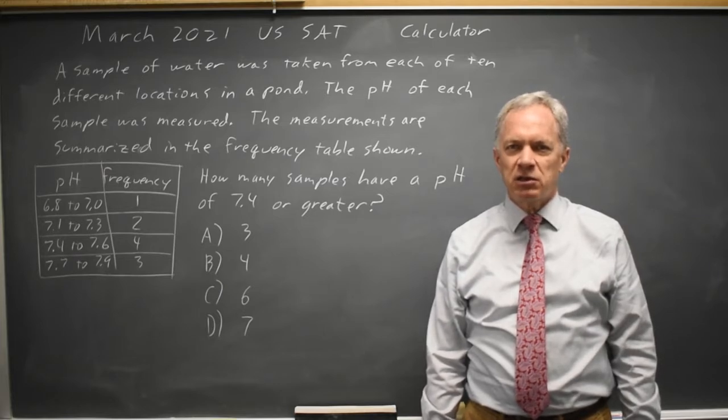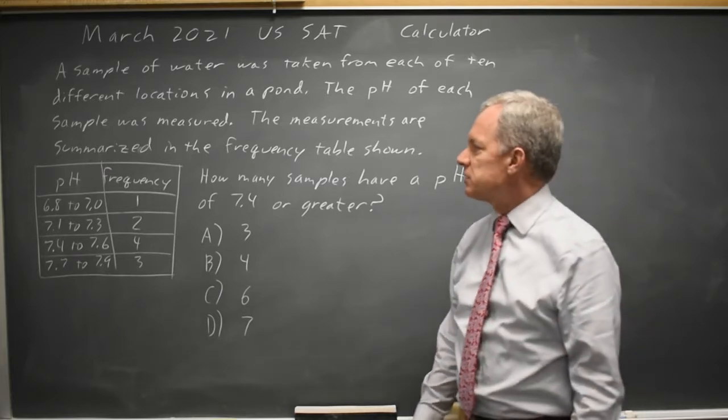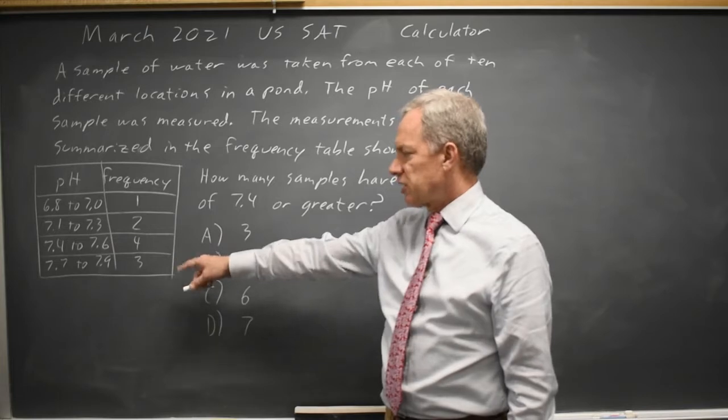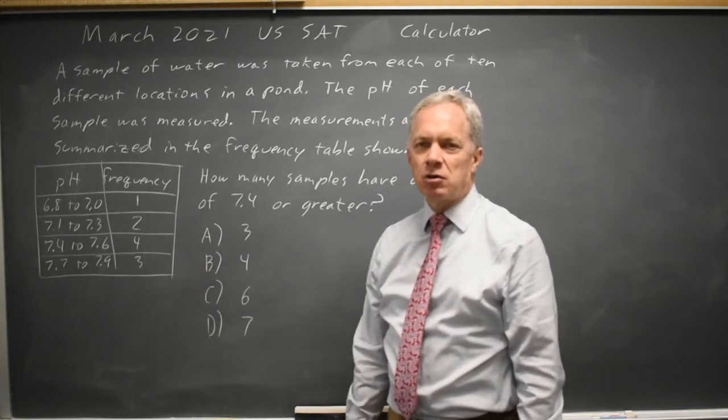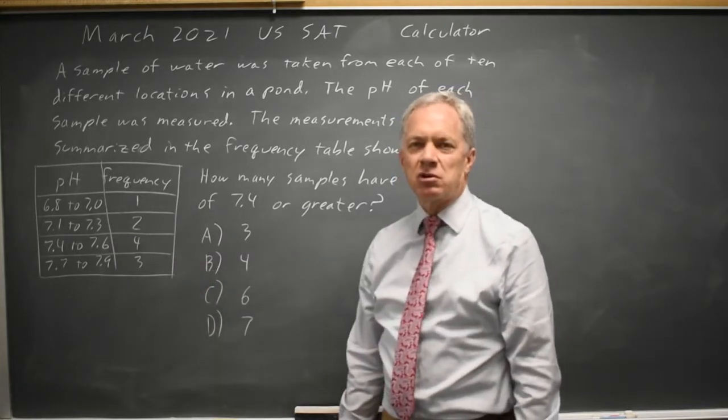The College Board is asking us to interpret a frequency table and the question is, from this frequency table, how many observations were values of 7.4 or greater?